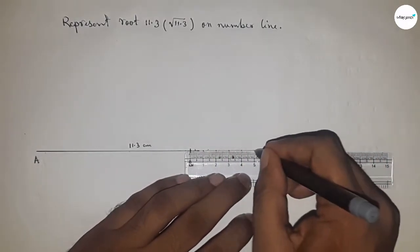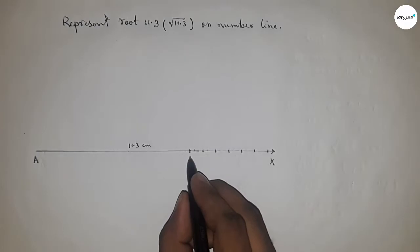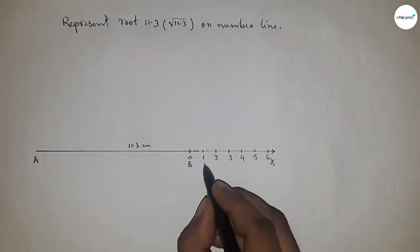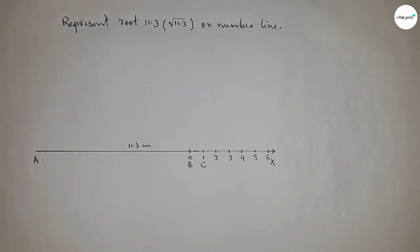So this is 0, 1, 2, 3, 4, 5, and so on, and taking here C point.